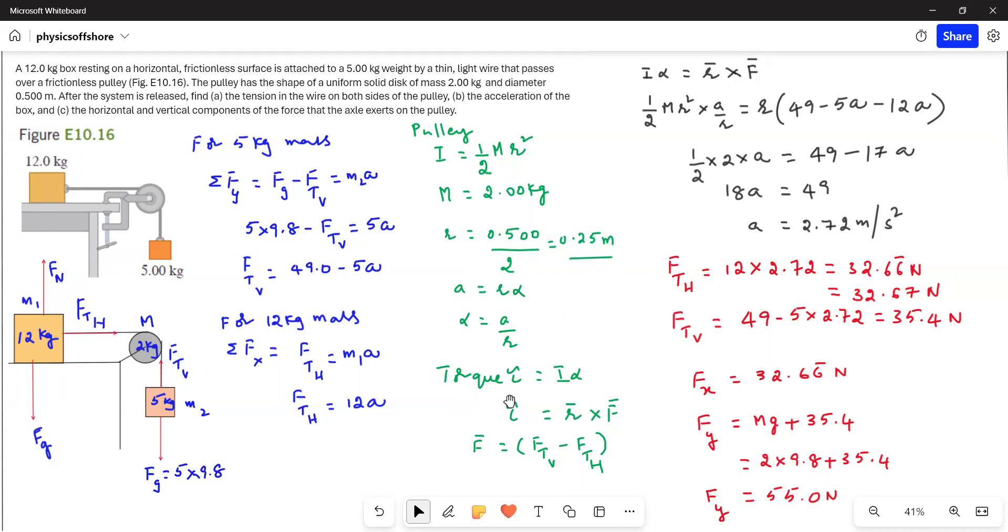Now the torque, torque equals I alpha, and we know torque equals r cross F bar. Here, the F, we have to take the difference in the tensions.